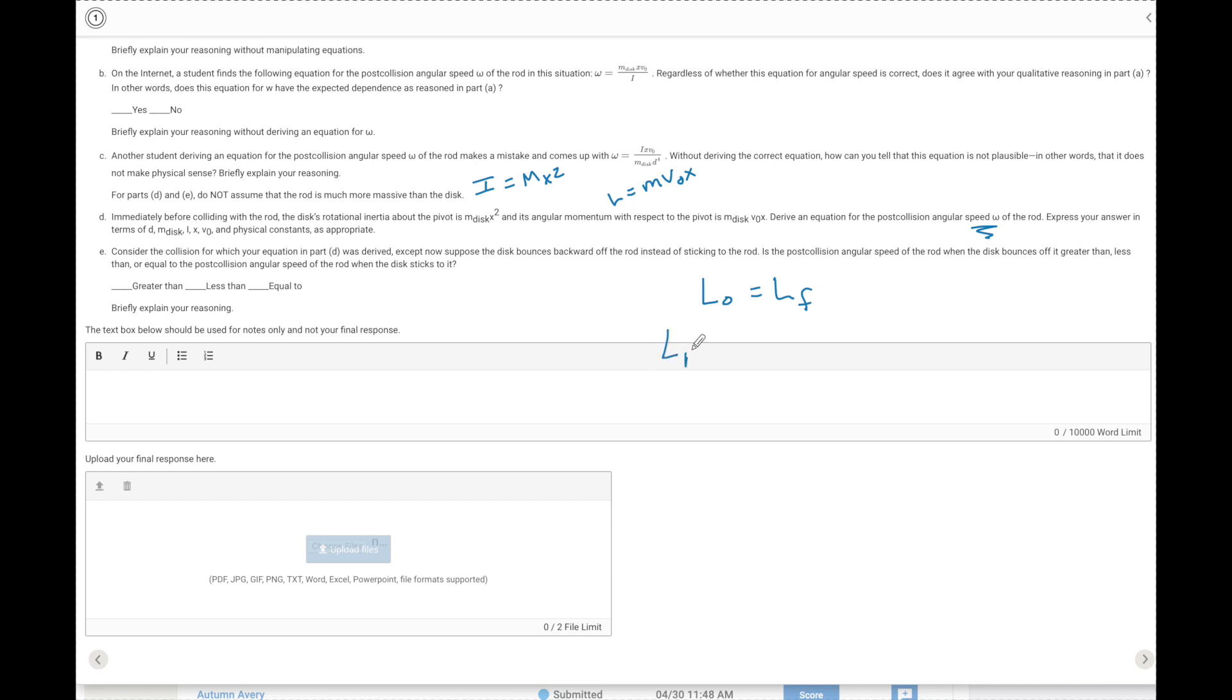We know that the angular momentum initial is going to be equal to the angular momentum final. Before the collision, we have the angular momentum of the rod plus the angular momentum of the disc. And that's going to be a little bit different after because the two things are going to stick together. So we are going to have the angular momentum of the disc slash rod system. We can now clean this up a little bit. The angular momentum of the rod initially was equal to zero. The angular momentum of the disc was given as M disc V0X.